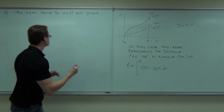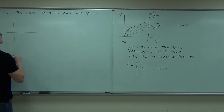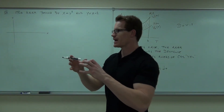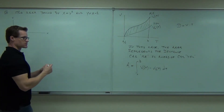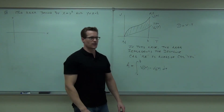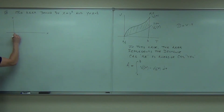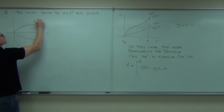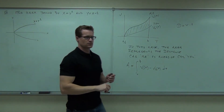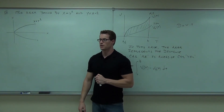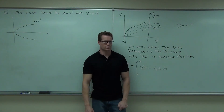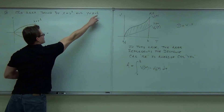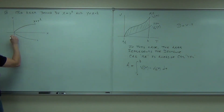Let's draw the graphs first so we can get a picture. First one: x = y². Since x is a function of y, you take your graph and look at it sideways — this thing is actually a sideways parabola. The other function is a line: y = x − 2. That has a y-intercept and a slope. Let's graph both on the same set of axes.